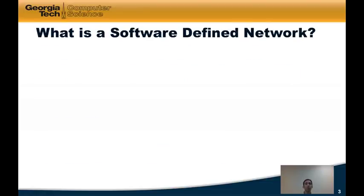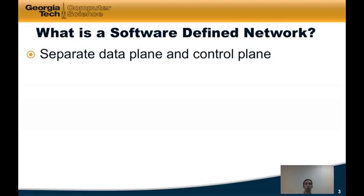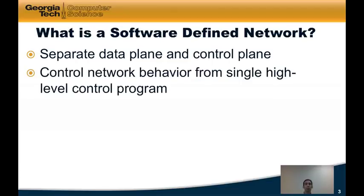So first of all, what is a software-defined network? Fundamentally, a software-defined network is a type of network architecture that separates the network data plane — that is, the network devices that forward traffic — from the control plane — that is, the software logic that ultimately controls how traffic is forwarded through the network.